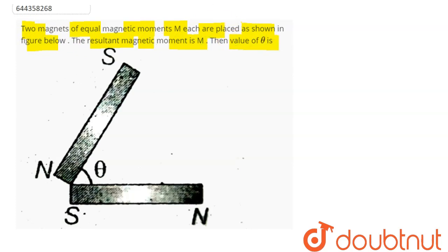So we can say here that from south to north is magnetic moment M. Next, from south to north this magnetic moment is also M. So we can place these two vectors tail to tail. These two magnetic moments will be given here as M, this is also M.